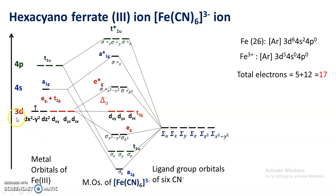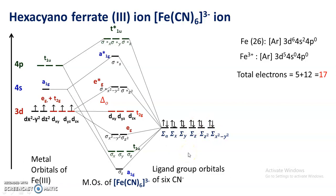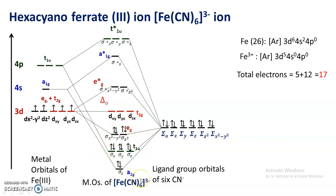There are 5 electrons in the 3d orbital of Fe³⁺. Each of the ligand orbitals is completely filled, giving 12 electrons from the 6 ligands. So 12 plus 5 gives 17 electrons total to be filled in the molecular orbitals. The first 12 electrons are filled one by one into the bonding molecular orbitals.